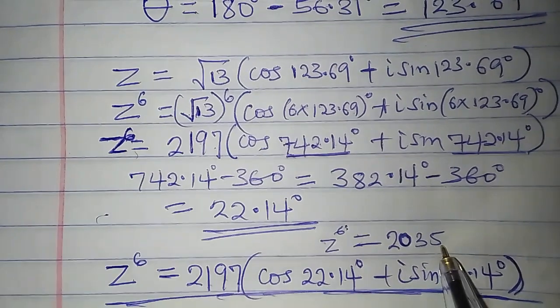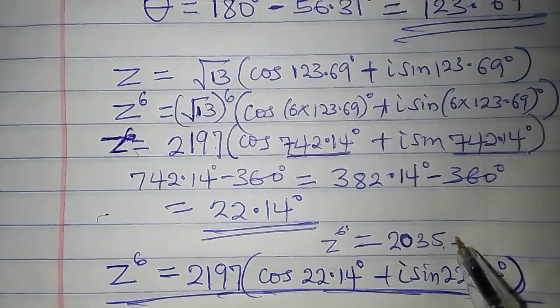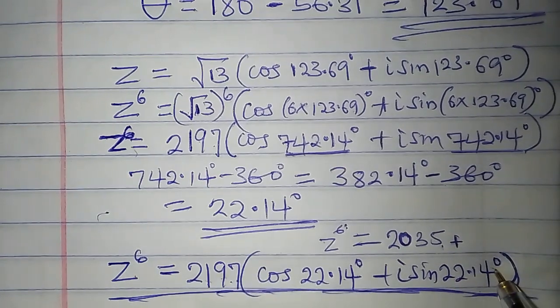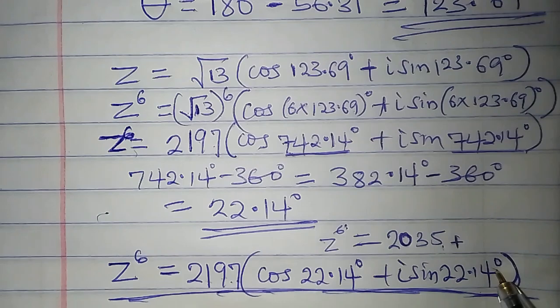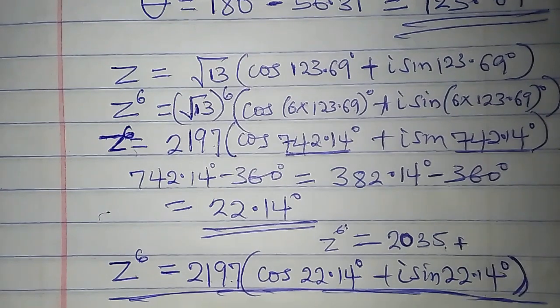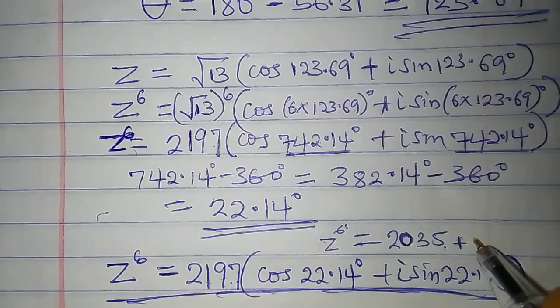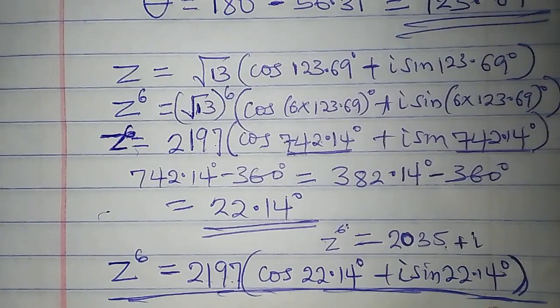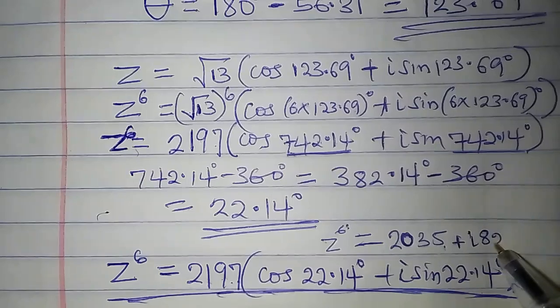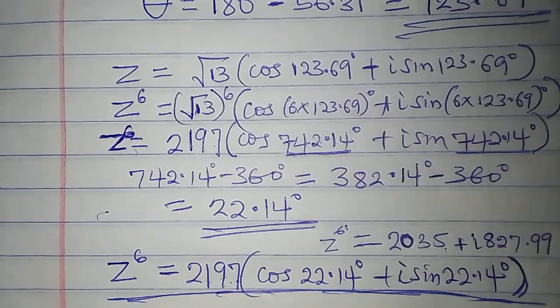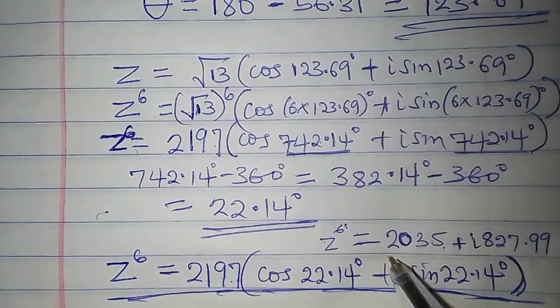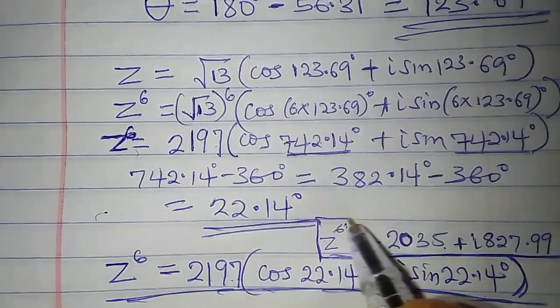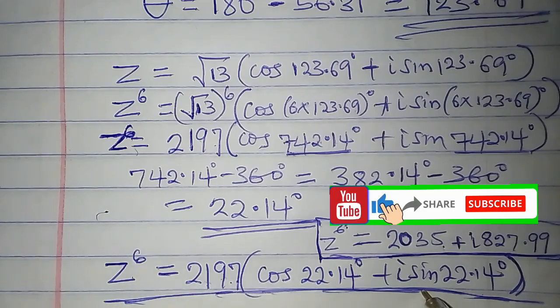Then plus 2197 times sine 22.14 is 827.99 times i. We can leave it like this. It depends on the way we want to leave it. So this is it in rectangular form and this is it in polar form.